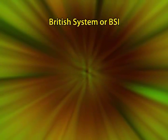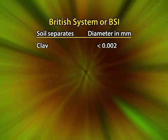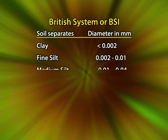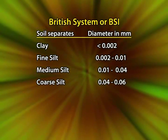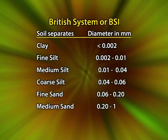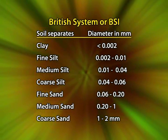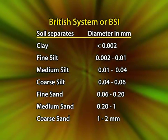According to the British system or BSI, dimensions of the different soil separates are: clay less than 0.002 mm diameter, fine silt 0.002 to 0.01 mm, medium silt 0.01 to 0.04 mm, coarse silt 0.04 to 0.06 mm, fine sand 0.06 to 0.2 mm, medium sand 0.2 to 1 mm, and coarse sand 1 to 2 mm.